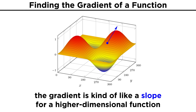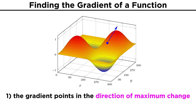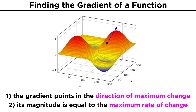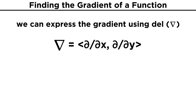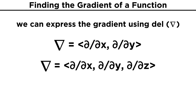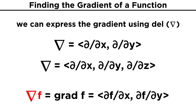This vector ends up being the closest thing to a slope that we can get in higher dimensions. It points in the direction of maximum change of the function, and has a magnitude equal to the maximum rate of change. There is also another common way to write the gradient, involving this upside-down triangle, which is referred to as del. This del is a vector of all the partial derivative operators, so in two dimensions it is d dx and d dy, and in three dimensions we add d dz. Writing del in front of a function f is the same as taking its gradient.